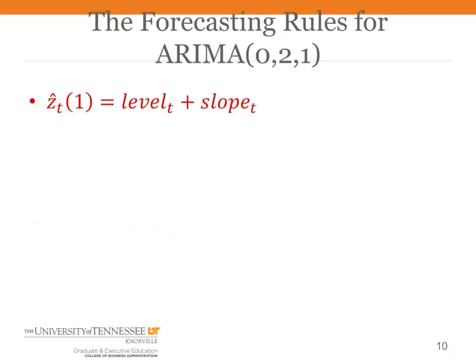Now we're just going to say what we have just said mathematically. The forecast, Z hat, made at time t for one period into the future is just the level at time t plus the slope. And the level at time t is just equal to the observed value at time t.